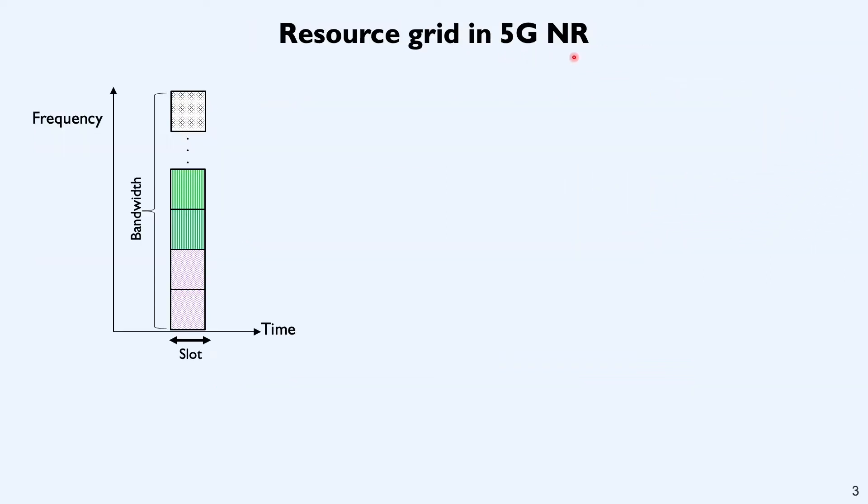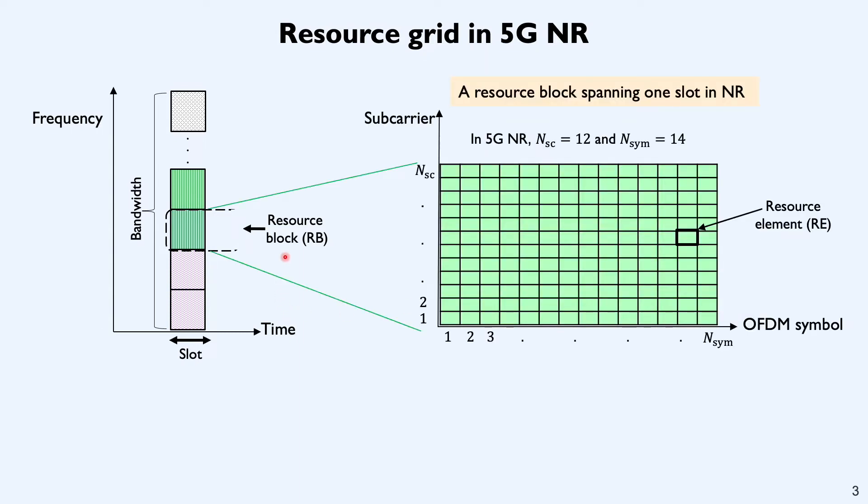Information in 5G NR is sent over time frequency resources. Along the frequency axis, it's sent over different sub-carriers that span a given bandwidth and along the time axis, it's sent across different slots. A group of 12 successive sub-carriers that share the same pre-coding is called a resource block, commonly called RB. Each RB in 5G NR comprises a collection of resource elements. Every little box shown over here is a resource element commonly called RE. In 5G NR, there are exactly 168 REs within an RB that spans one slot.